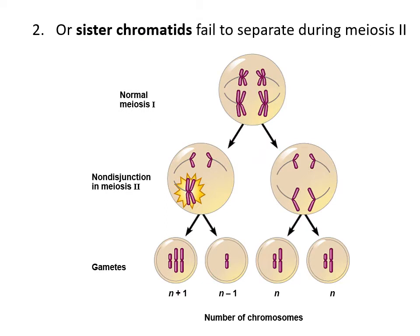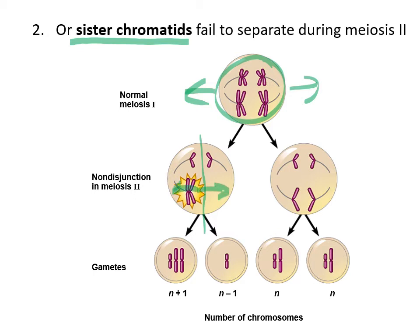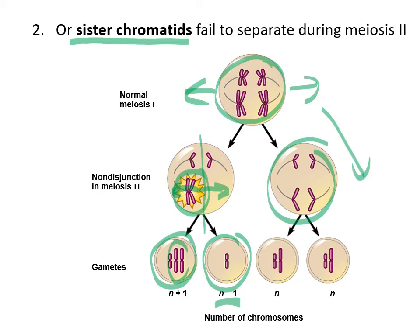This can also happen during anaphase 2 of meiosis — another non-disjunction event, but in this case it's not the homologous pairs. They did separate properly during anaphase 1 and ended up on each side. But then during anaphase 2, when the sister chromatids are supposed to separate and one goes to each side, that might not happen. So you'd end up with one sex cell with an extra pair and one sex cell missing one. For the side that did make it through anaphase 1 properly, you would get two functional sex cells.